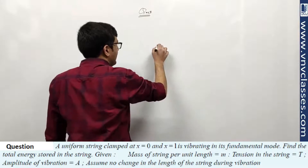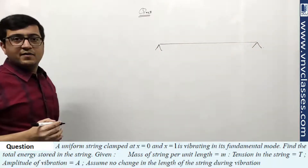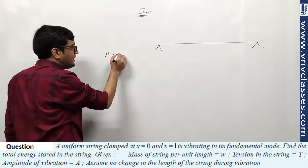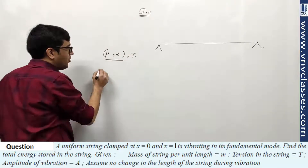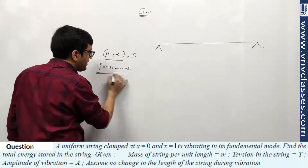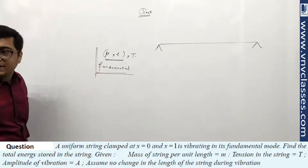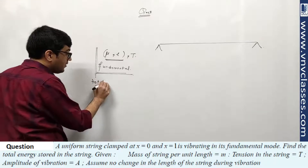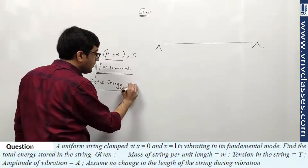Question: There is a wire fixed at both ends. Mass per unit length of the wire is μ, length of wire is L, tension in wire is T. Suppose it oscillates in fundamental frequency — standing wave in a wire fixed at both ends at fundamental frequency. Find the total energy between two nodes.